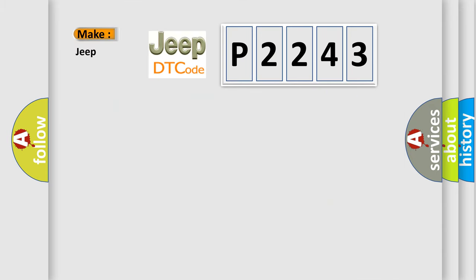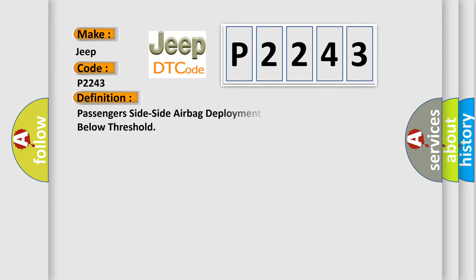The number itself does not make sense to us if we cannot assign information about what it actually expresses. So, what does the diagnostic trouble code P2243 interpret specifically for Jeep car manufacturers? The basic definition is: Passenger's side airbag deployment control circuit — resistance below threshold.